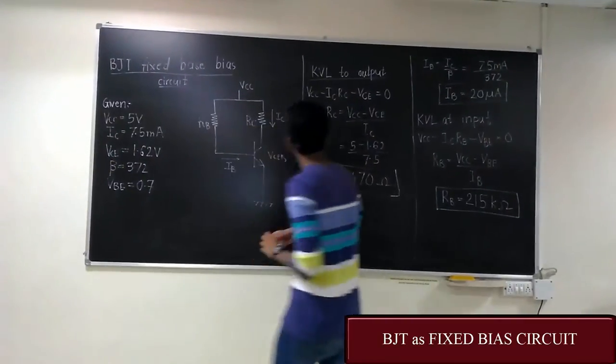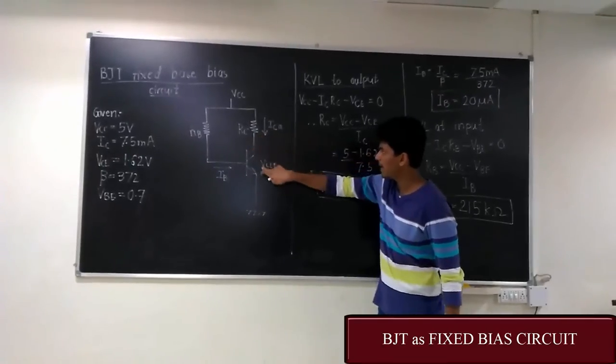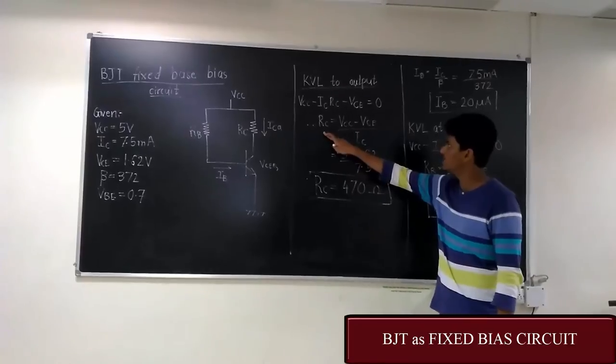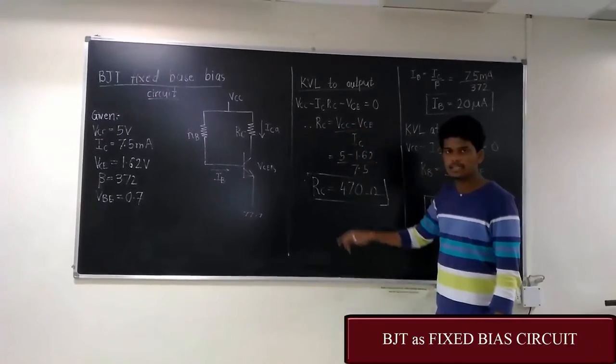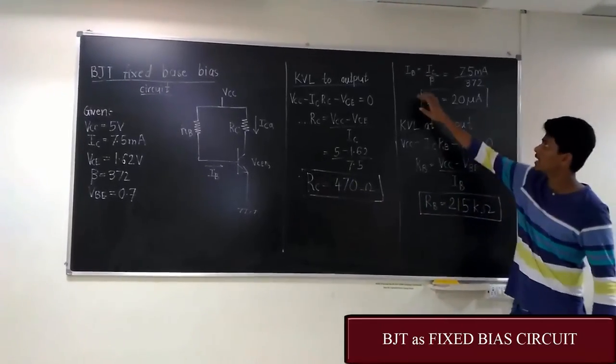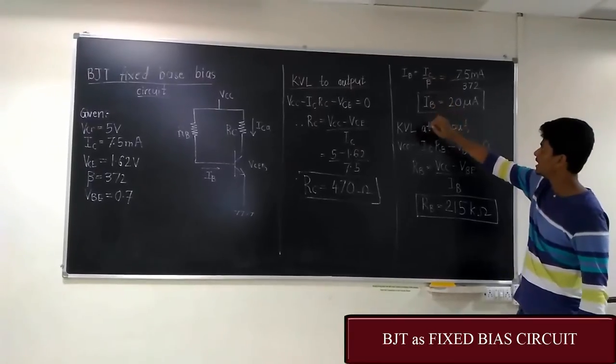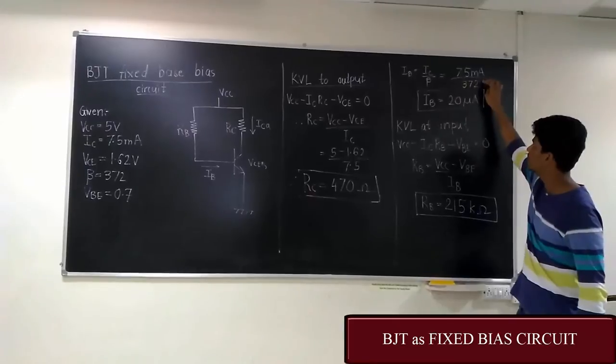Here applying KVL to the output we get VCC minus IC*RC minus VCE is equal to 0. That is RC is equal to VCC minus VCE upon IC. Now we also know that IB is equal to IC upon beta. That gives us IB is equal to 20mA. The beta value is 372.